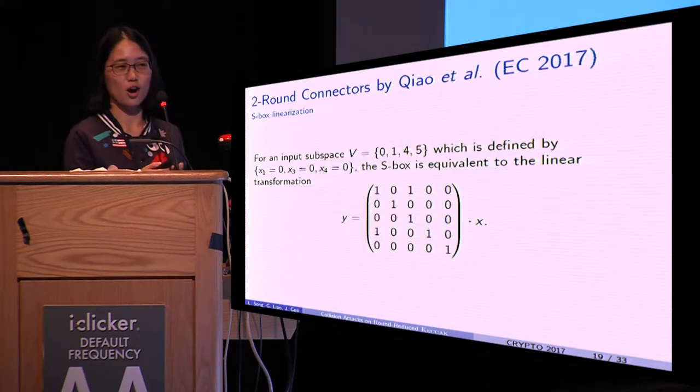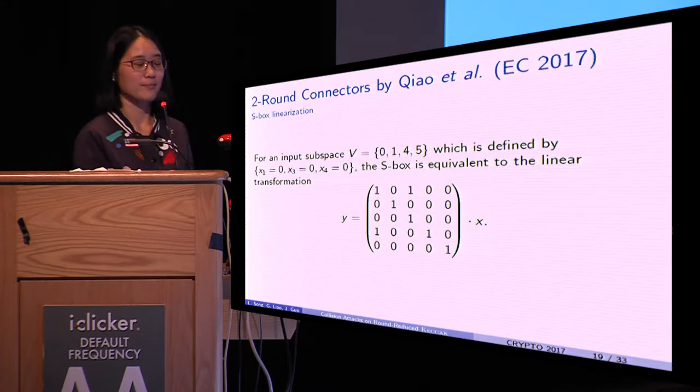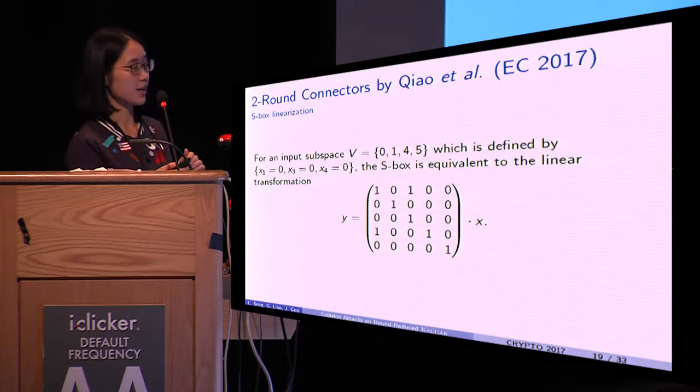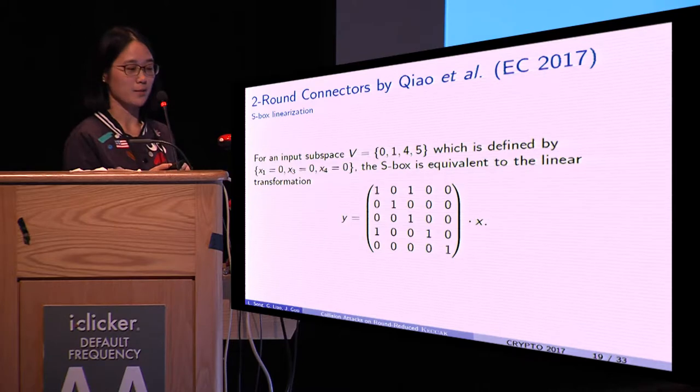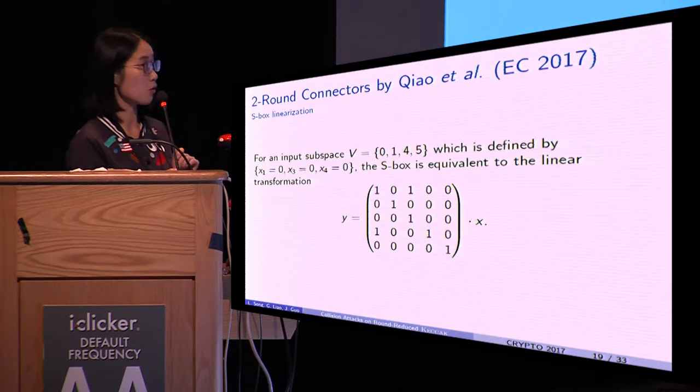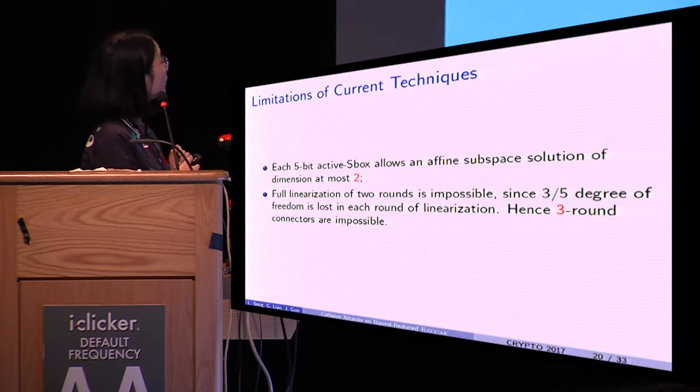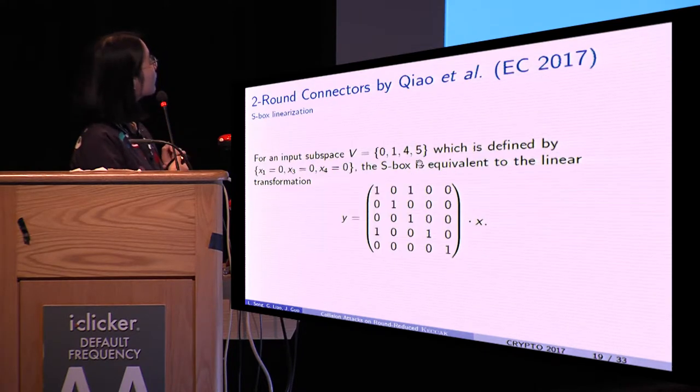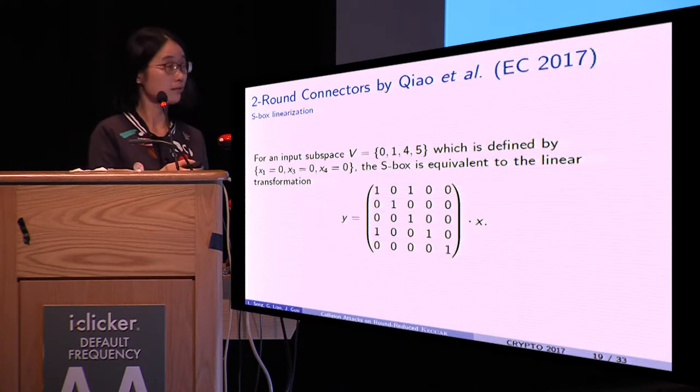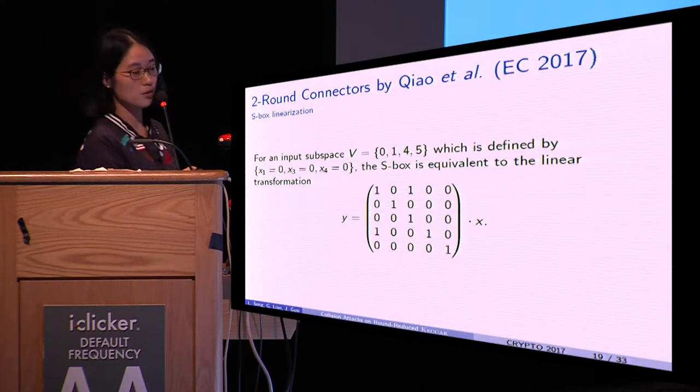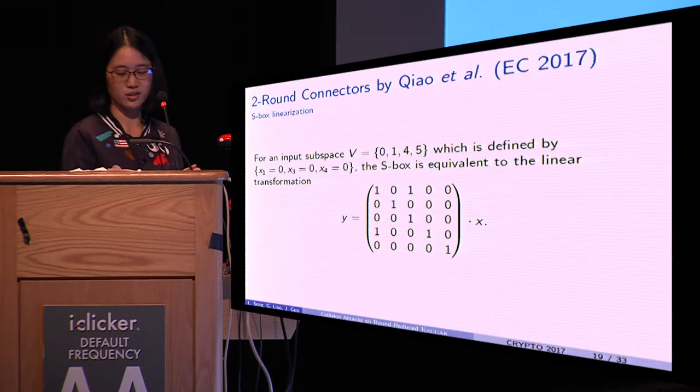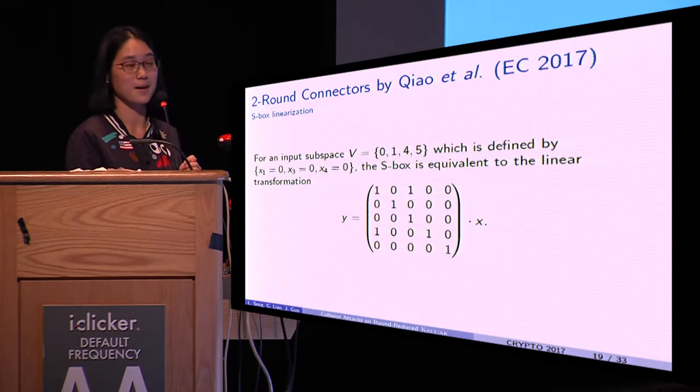Let's show how to linearize one S-box. By confining the input to the set V, which contains four elements that can be defined by these three equations, then the S-box is equivalent to the following linear mapping.